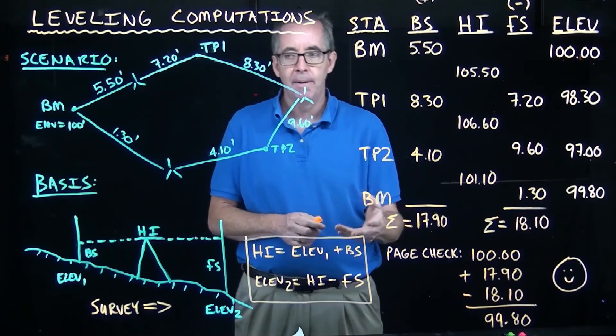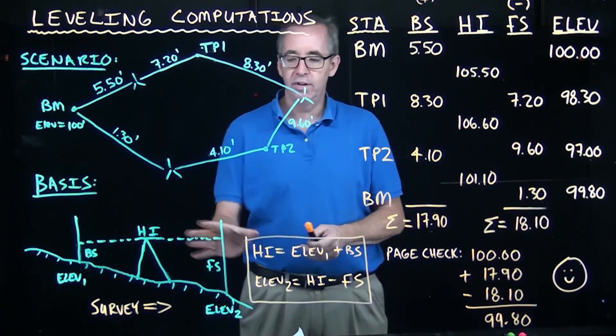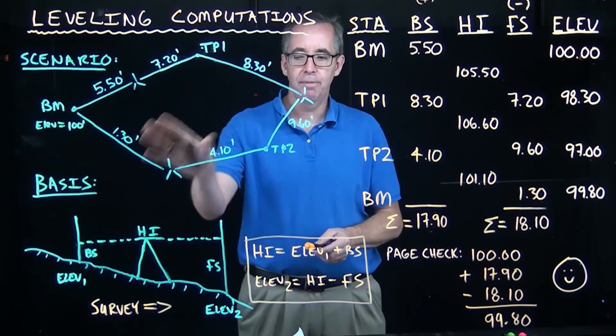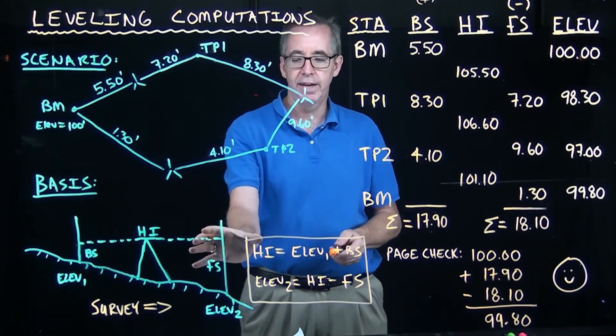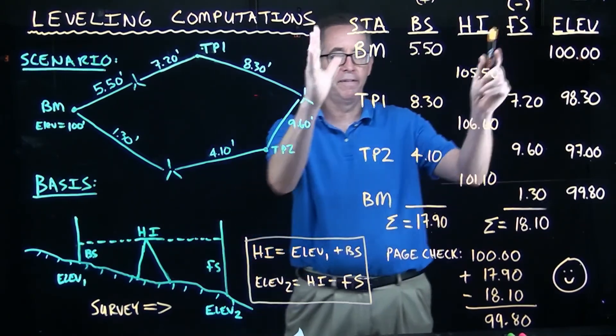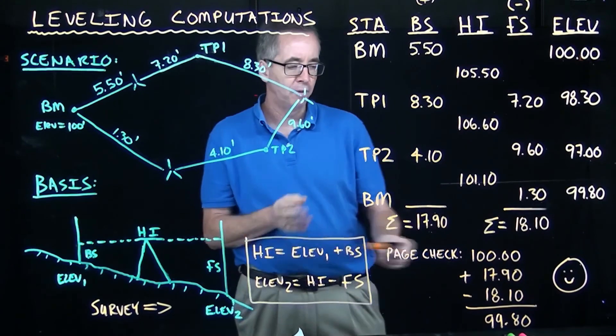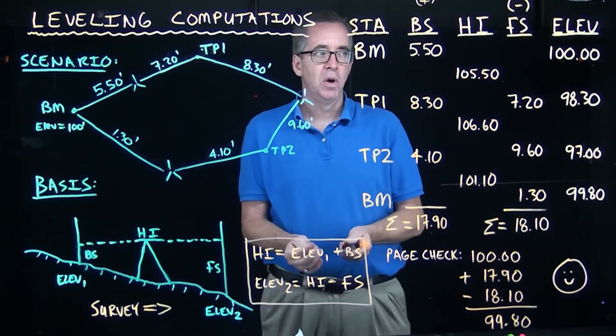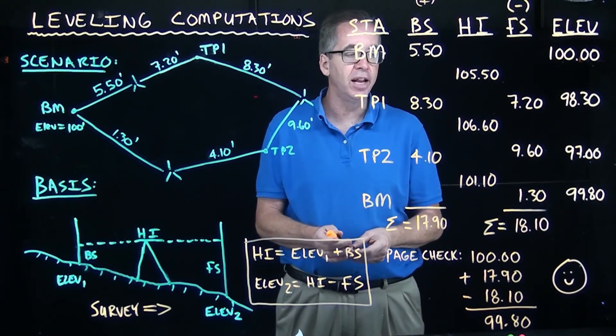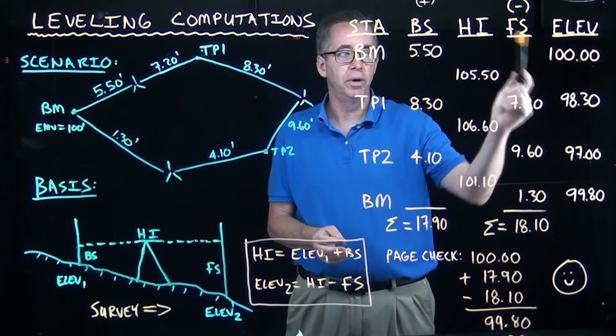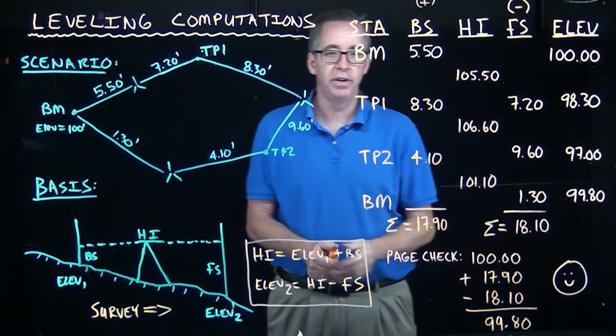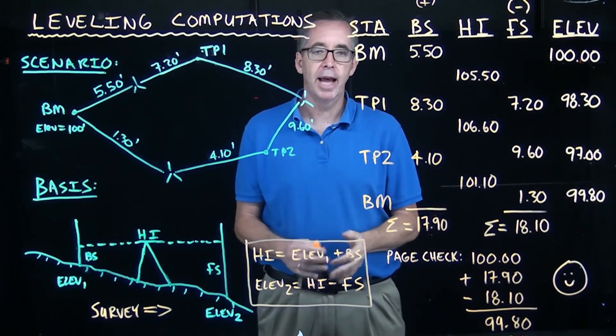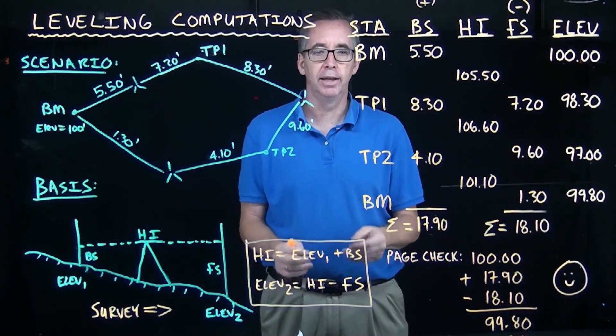So to kind of recap, we talked about the calculations involved in terms of the leveling process. We talked about the leveling process, the calculations involved, we set everything up in the table, we performed a page check, and we saw that in our particular case we had an error or misclosure of 0.2 feet, because we started off an elevation of 100 and we closed it at an elevation of 99.8. And that concludes this video on leveling computations.